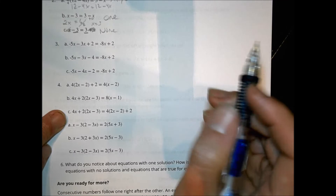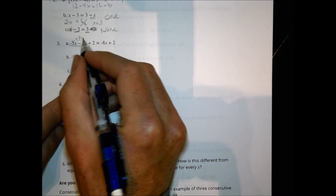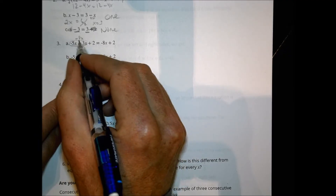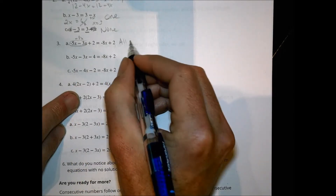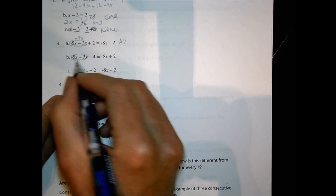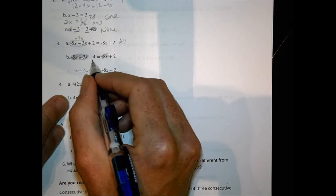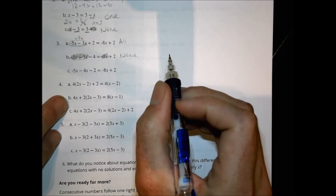For number 3, similar idea — we can combine like terms. Negative 5x and minus 3x gives minus 8x, which matches. So minus 8x plus 2 equals minus 8x plus 2 — everything is the same, so that's infinite solutions. Here, I also have negative 8x on both sides — they cancel — but negative 4 equals 2 is not possible, so no solution there.